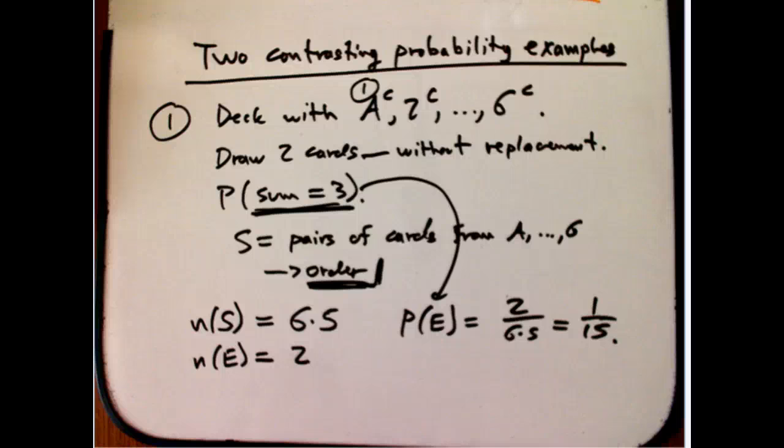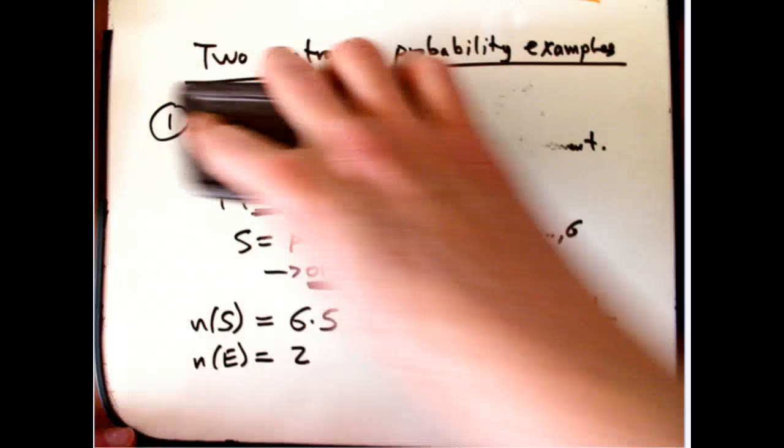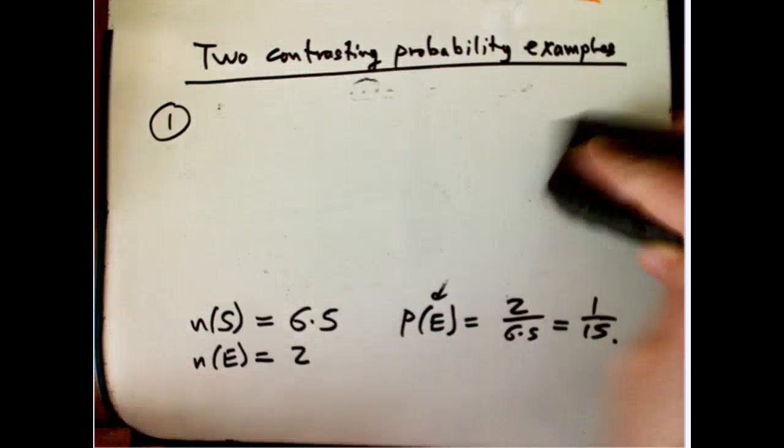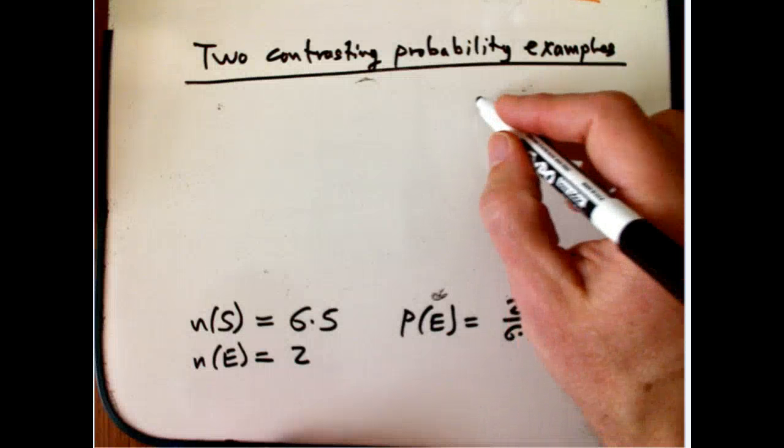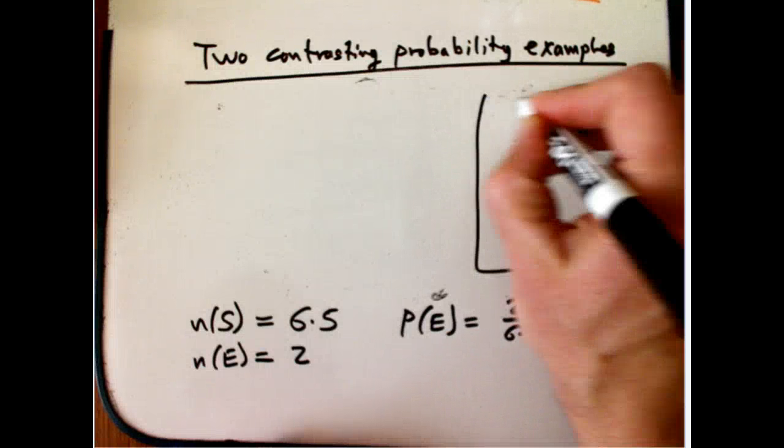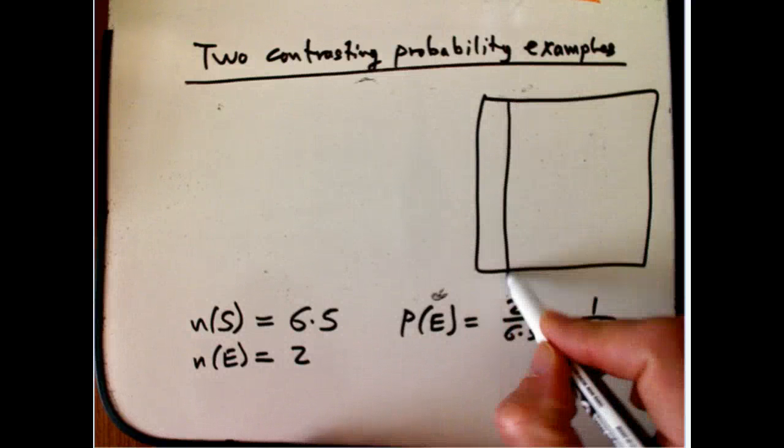And that's a correct calculation. And one way to really, really be sure of that is in these very small cases with sample spaces, with small sample spaces, I can actually draw the entire sample space. Now, usually you can't do that, and that's why we need fancy counting rules and fancy probability rules.